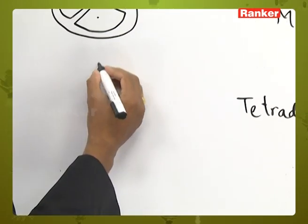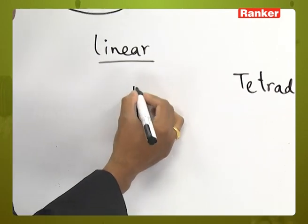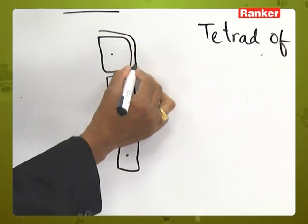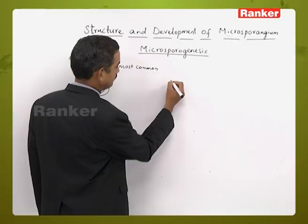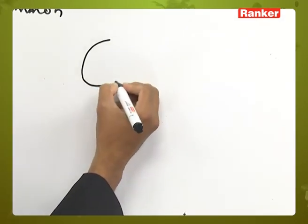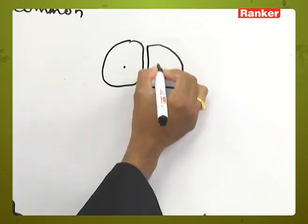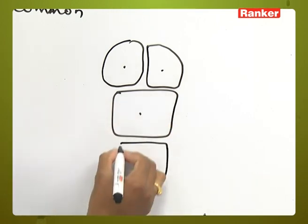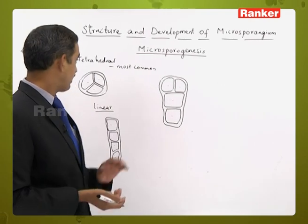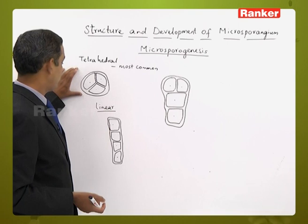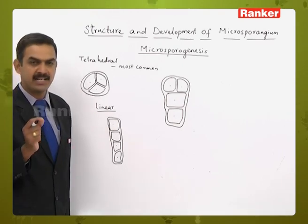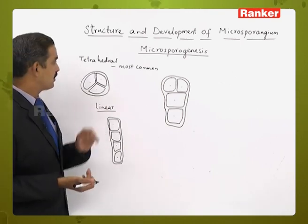Sometimes microspores may also be arranged in a linear form, where all four are in a straight line. They may also be arranged in a decussate form or in a T-shape. Between two microspores, the callous wall helps hold them together as a single unit. Overall, there are five different arrangement forms.